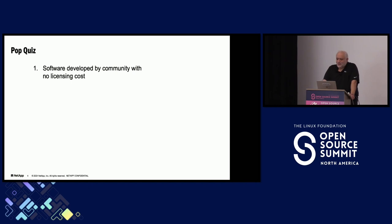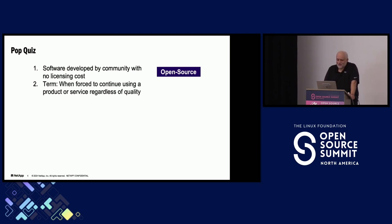Software developed by a community with no licensing cost? Open source. Open source code — free licensing, you get to use it without having to pay any licensing. That's a great benefit of it.